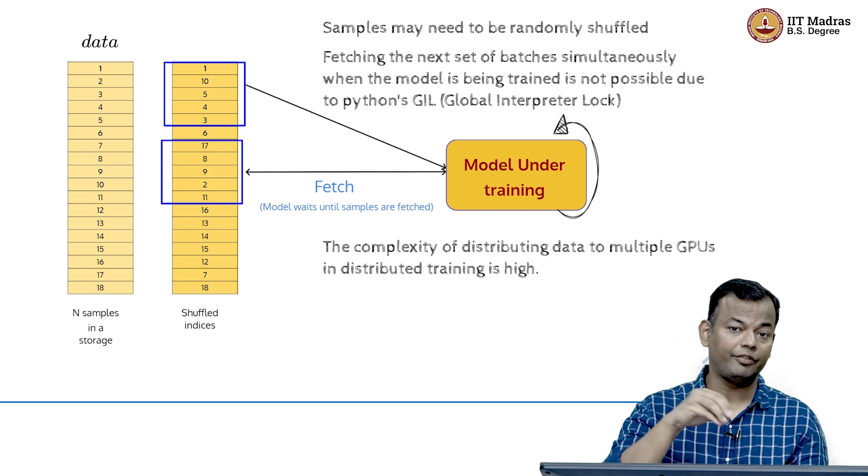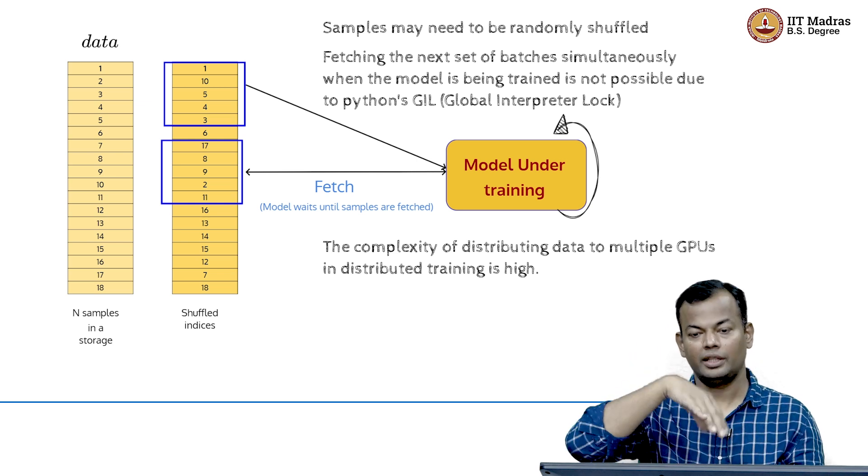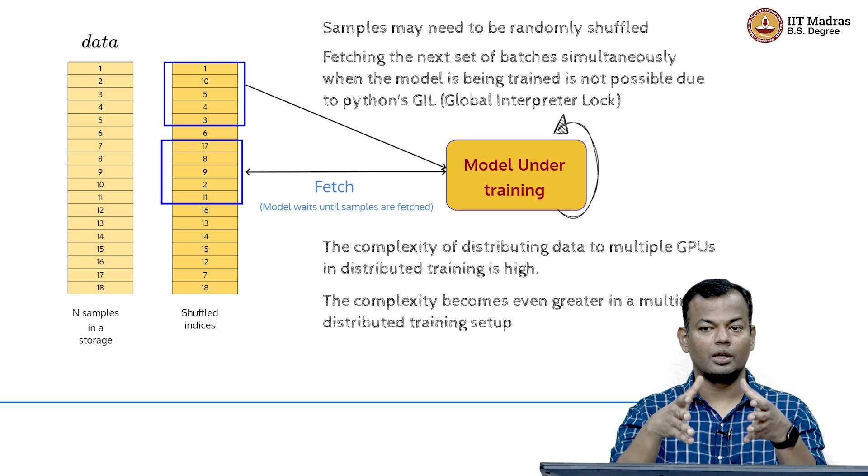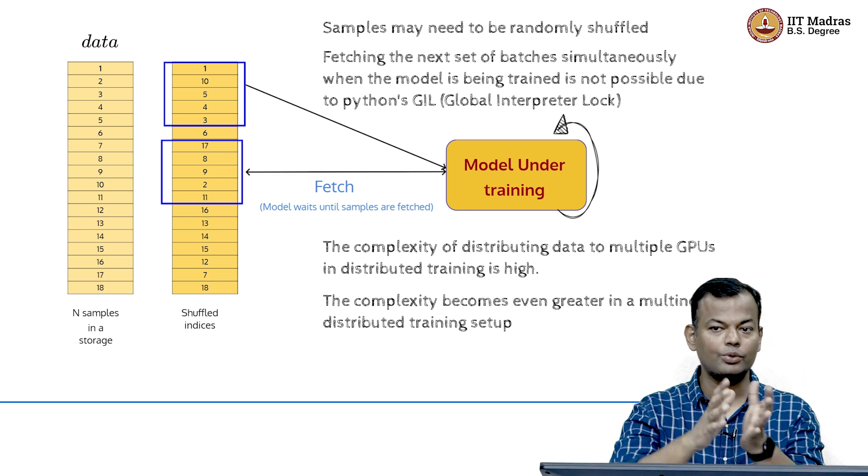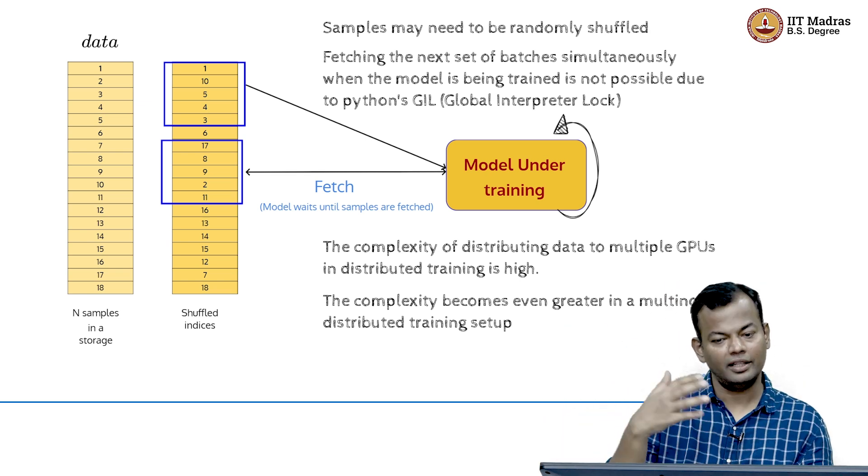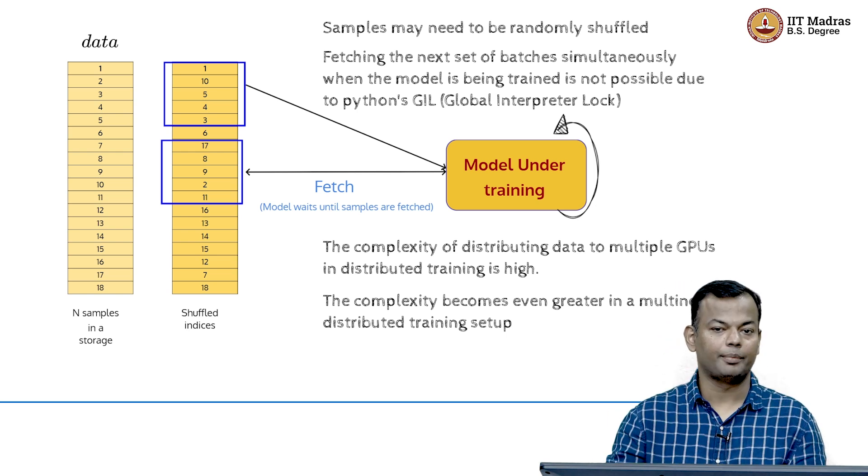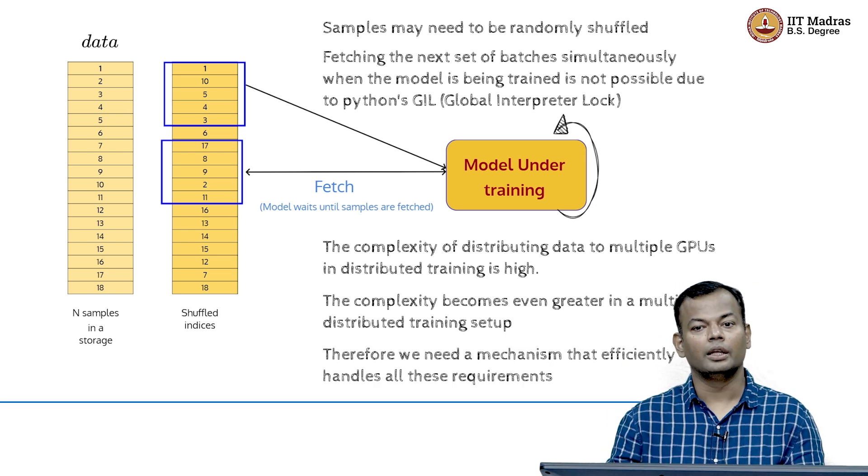And then further, if you want to distribute this data on multiple GPUs, then there is some complexity involved. And if it is multiple nodes, that means one node has eight GPUs and then there are many such nodes, then distributing it adds some more complexity to the setup of distributed training.